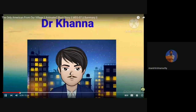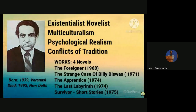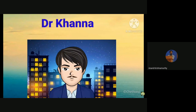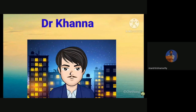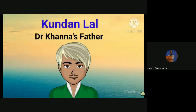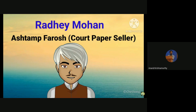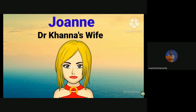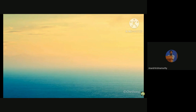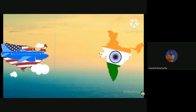The story has four main characters: immigrant physicist as the main character, and also conflicts of tradition. Dr. Khanna is an outstanding immigrant physicist at the University of Wisconsin; Kundan Lal, who is Dr. Khanna's father; Radhi Mohan, who is an ashtam farosh; and Joanne, who is Dr. Khanna's wife.